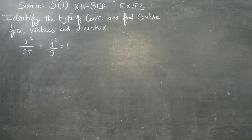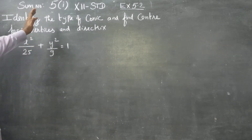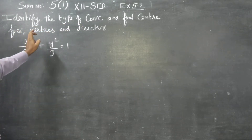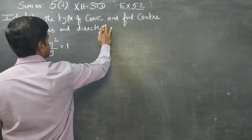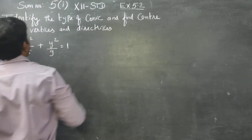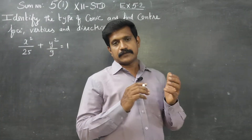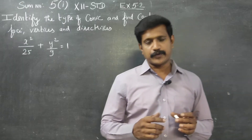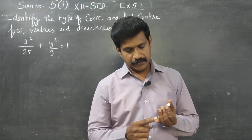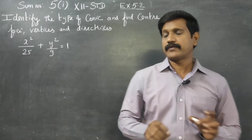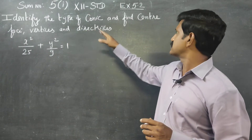Dear students, in exercise number 5.2 on analytical geometry, the fifth sum asks us to identify the type of the conic and find the center, foci, vertices, and directrices. The three types of conics — parabola, ellipse, and hyperbola — are identified by their foci, vertices, and directrices.